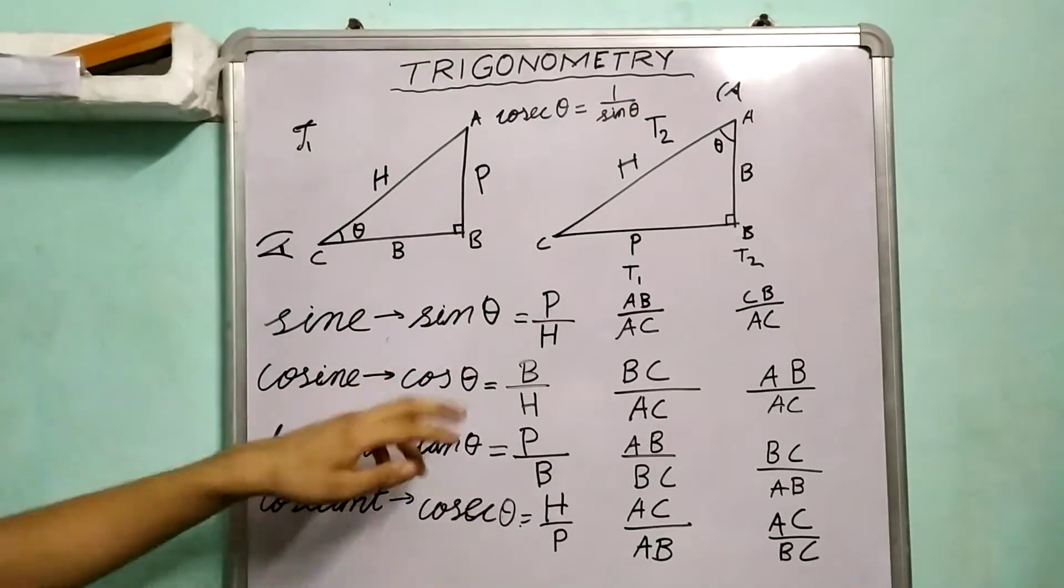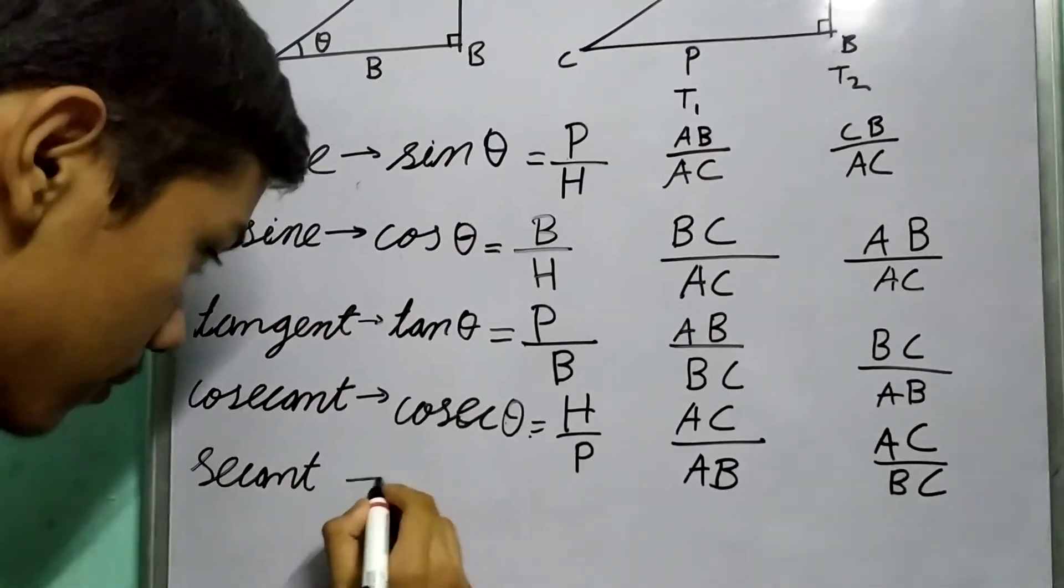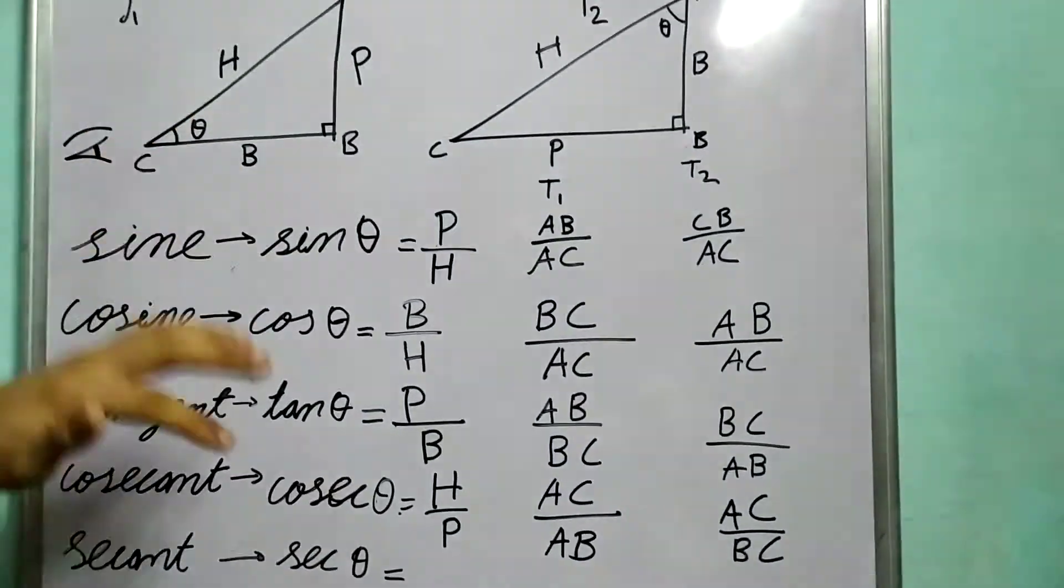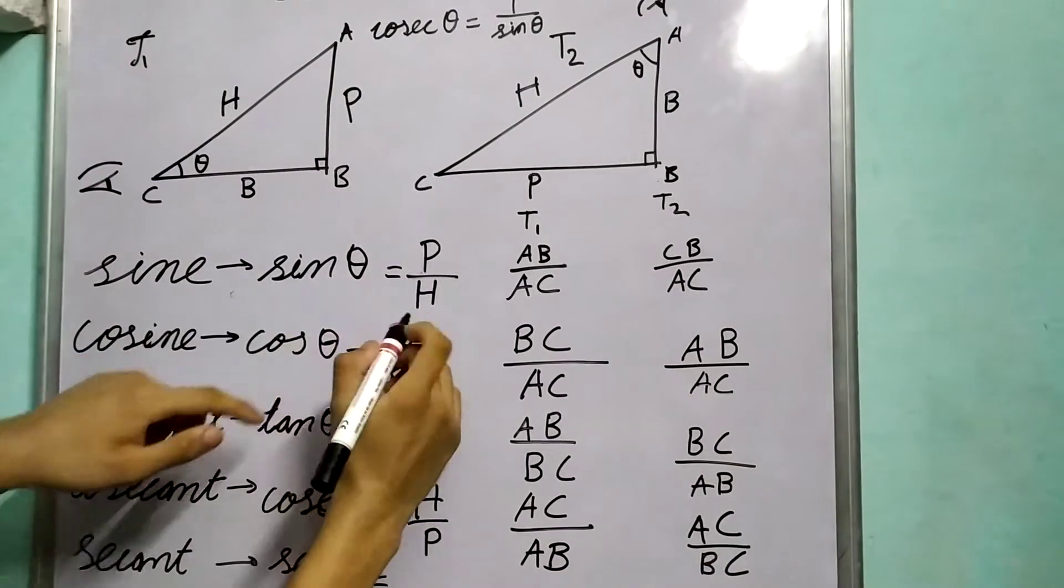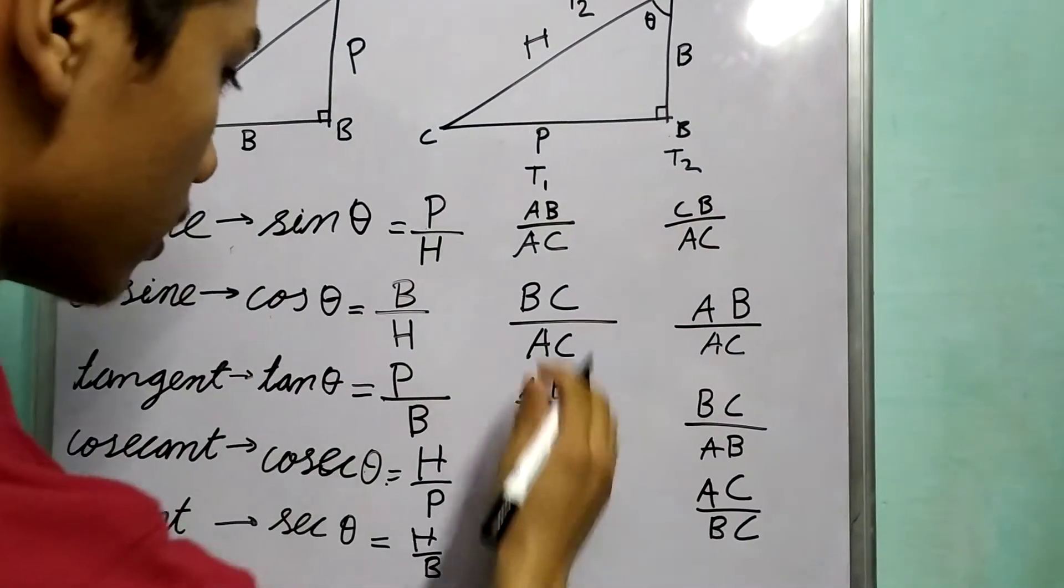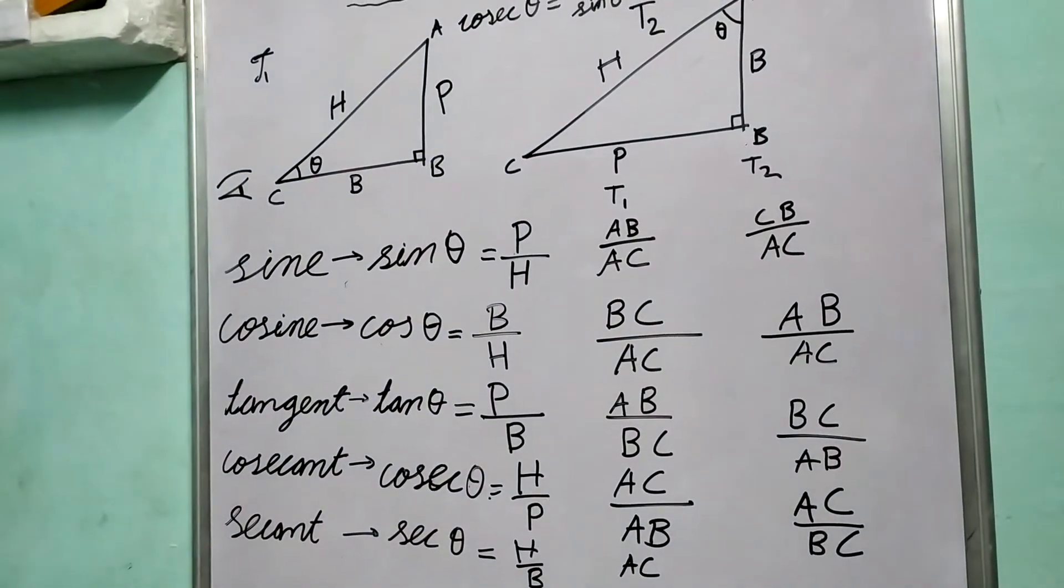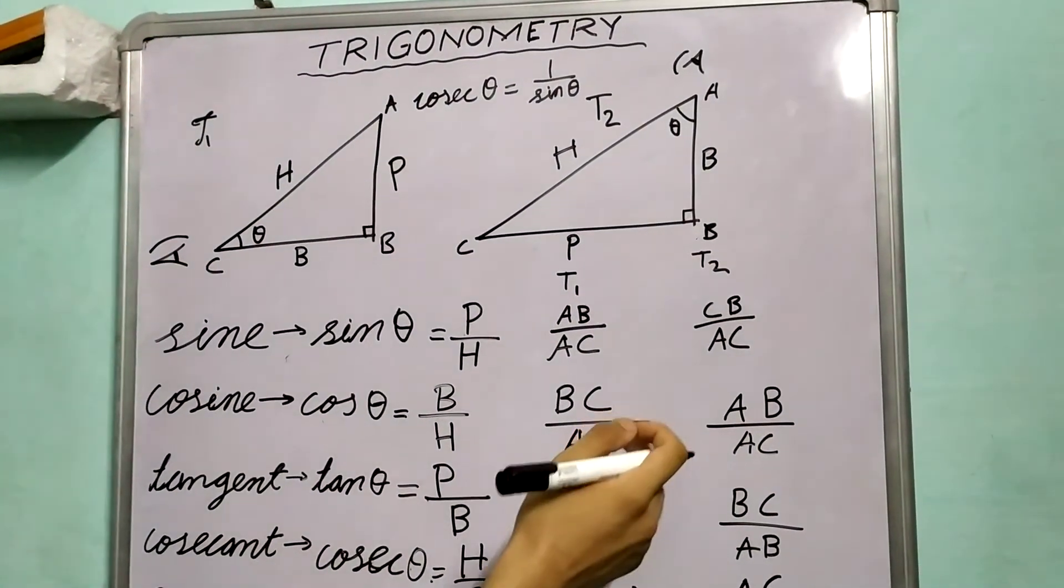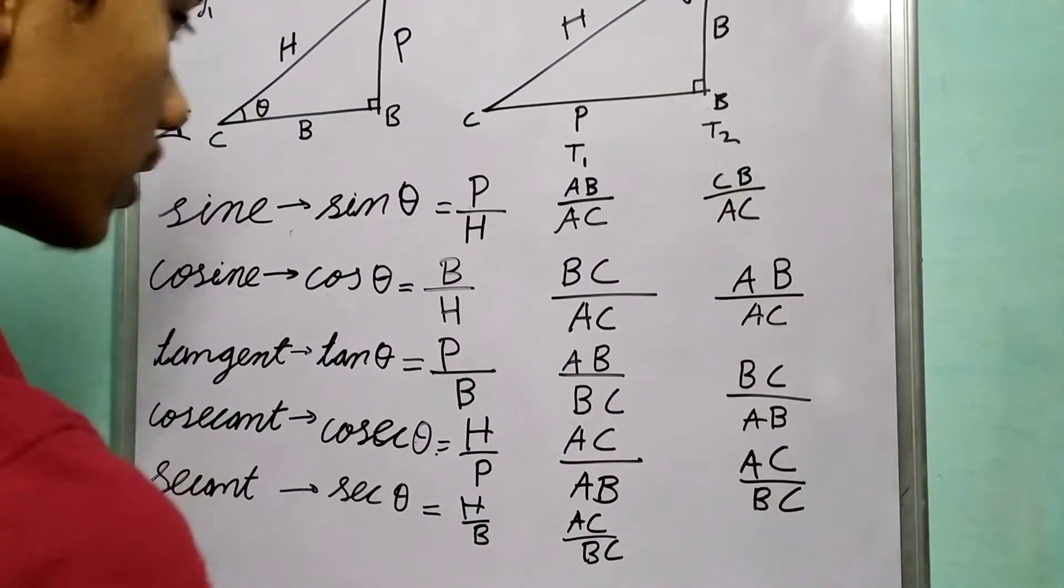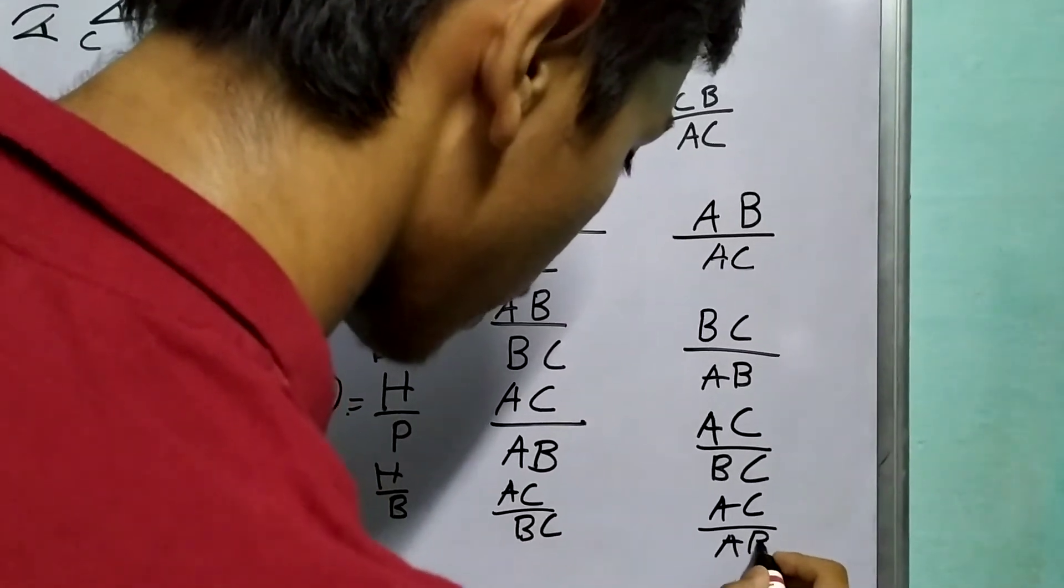Now what if we have a ratio which is a reciprocal of cos theta? It is known as secant, abbreviated as sec. Sec theta is 1 upon cos theta, so it's 1 upon base upon hypotenuse, which is H upon B. And we can solve for them. So in this case, hypotenuse over base, AC upon BC. And in the second case, AC upon AB.